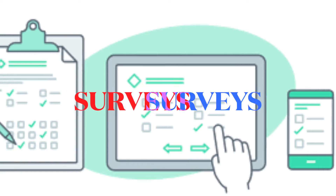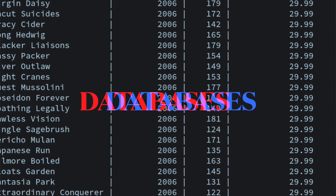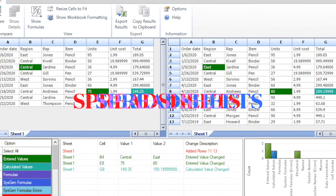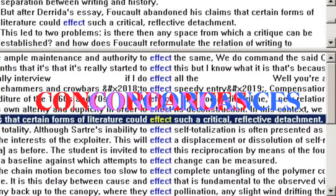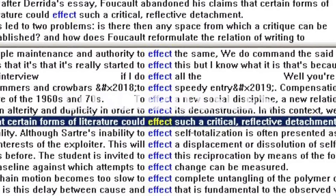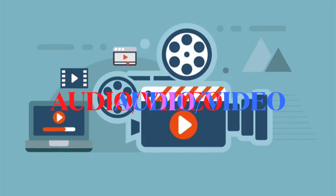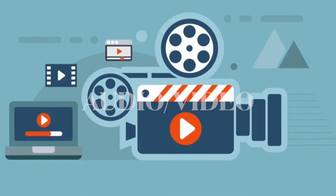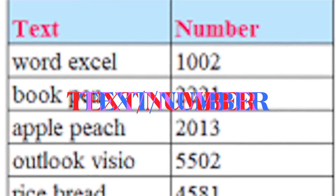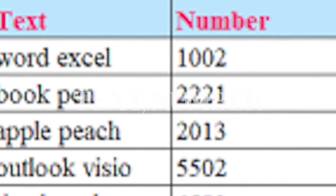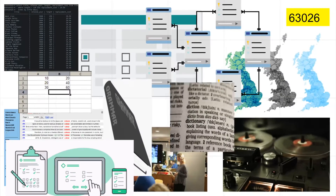Maps, surveys, databases, spreadsheets, concordances if you're a linguist, grammar, dictionary, audio and video, text, numbers — all of these forms can be considered data.